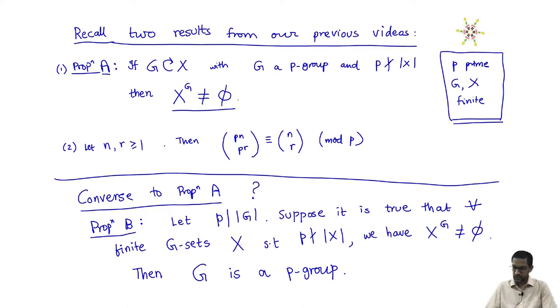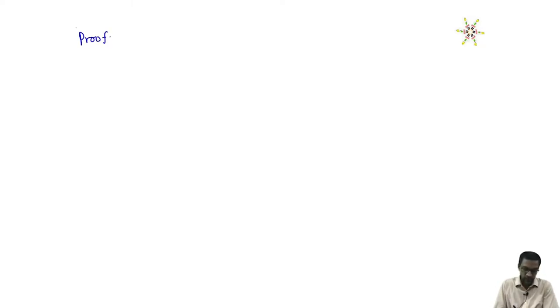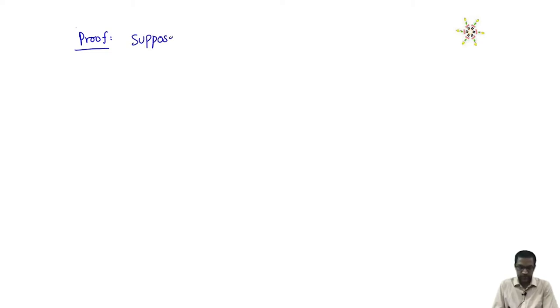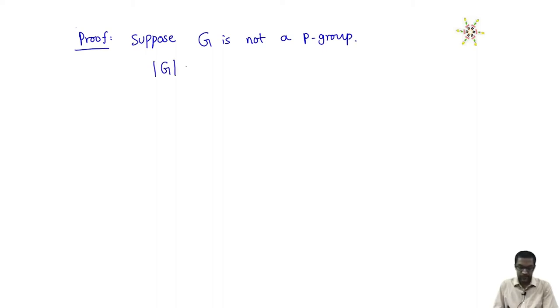We will prove this statement by first rephrasing it. It turns out this is in fact true. To prove it, let us rephrase it in its contrapositive form. We will show: suppose G is not a p-group — prove by contradiction. But remember, the cardinality of G is divisible by p, so p will be one of the factors, occurring to some power.